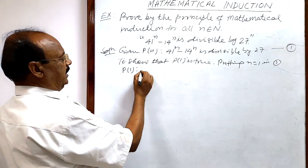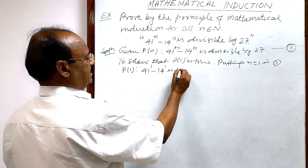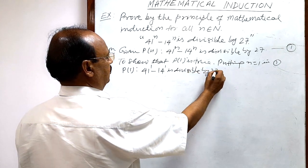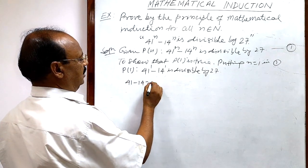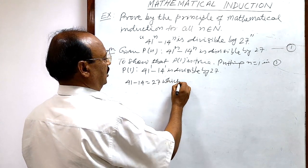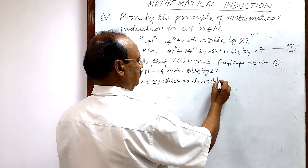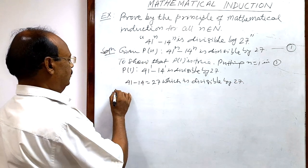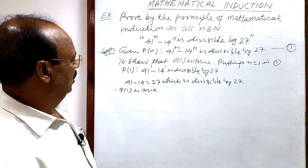P(1) is: 41 to the power 1 minus 14 to the power 1 is divisible by 27. We get 41 minus 14 equals 27, which is divisible by 27 — every number is divisible by itself. Therefore P(1) is true, so the first step is complete.